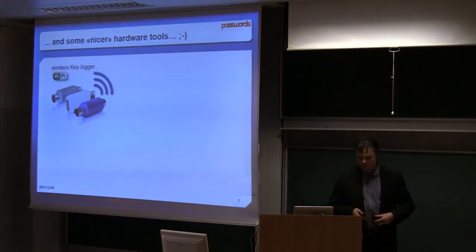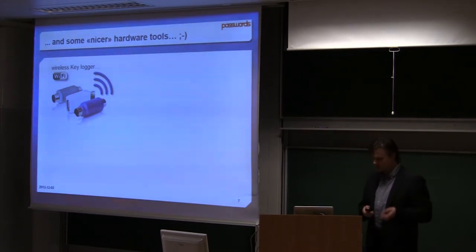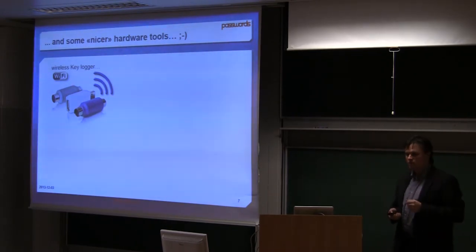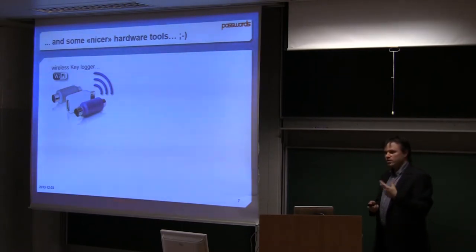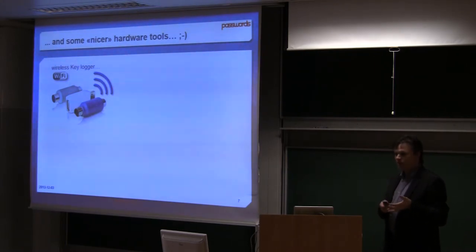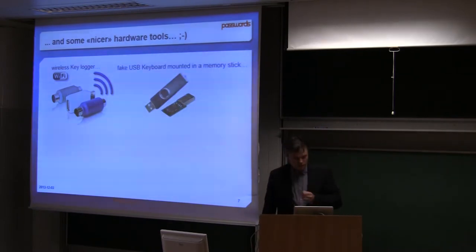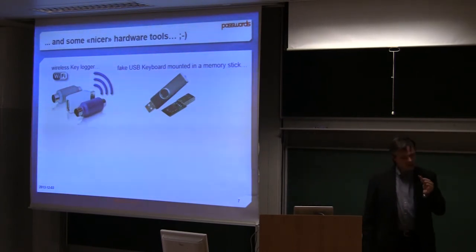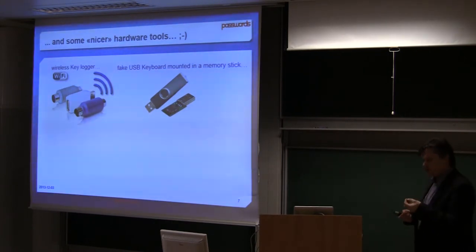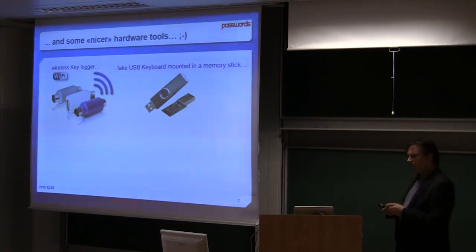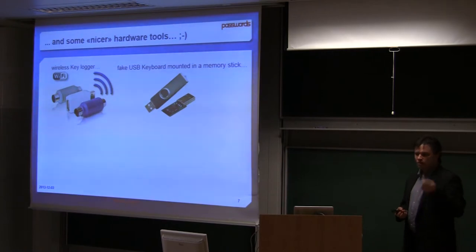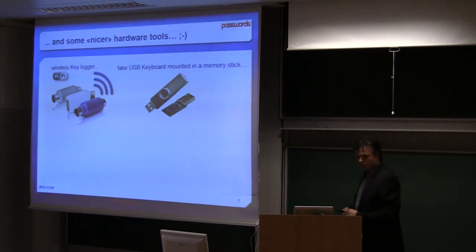You have some nicer hardware tools. For example, the wireless Keylogger which is Wi-Fi enabled. You can say every day at 2 o'clock you try to take this access point and send what was typed from the day before. You don't need to be there physically, you can go once a week near the building with your portable access point and recover the different data. You can have also some fake USB keyboard like this one mounted in a memory stick. Inside there is a chip that makes it like a keyboard, and you can put some different firmware. If people didn't lock the computer, you can open internet, download a virus or whatever, install some sniffer or something else.